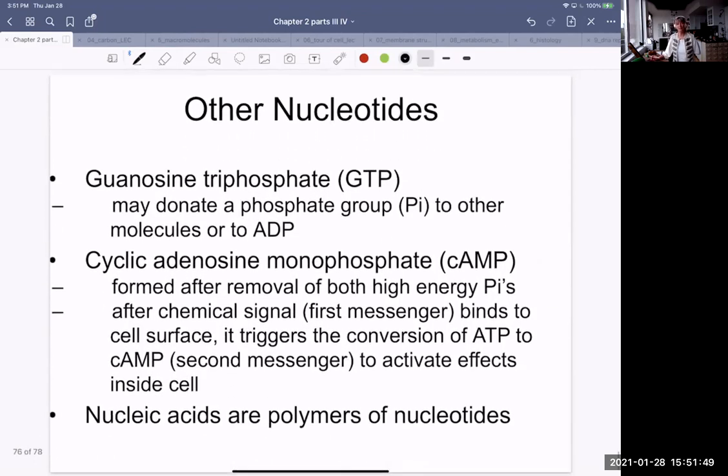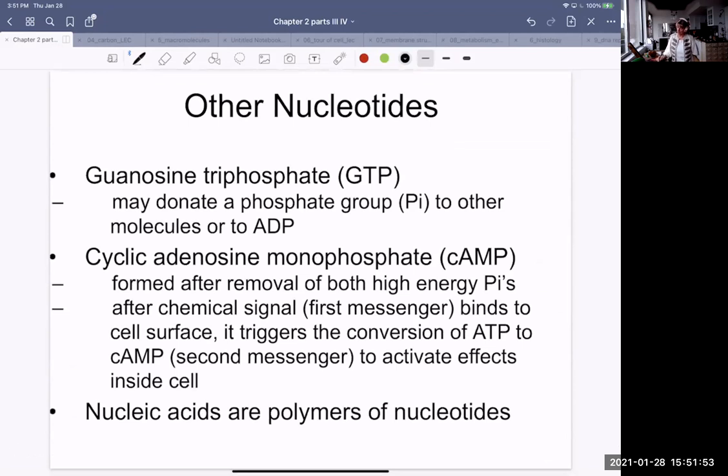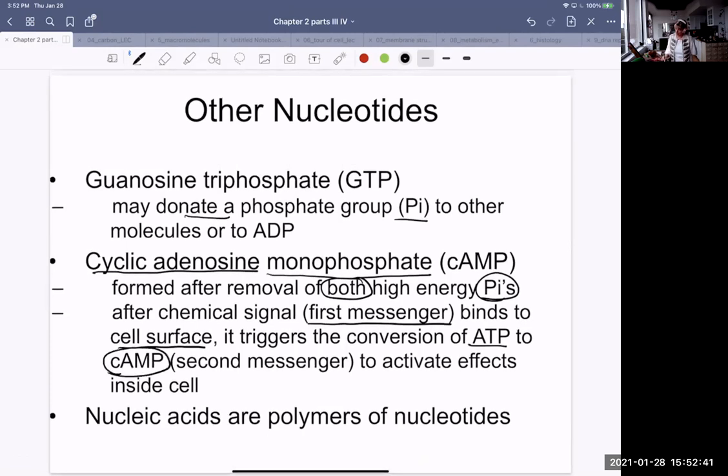Our overview is glycolysis, anaerobic fermentation, but if there's oxygen, aerobic respiration. Here's some other nucleotides of interest. One is called guanosine triphosphate. Sometimes it donates a phosphate group to other molecules or to ADP. It's quite instrumental in the second messenger system of a cell. It's often there waiting to do a bit of work. Cyclic adenosine monophosphate, that's AMP, adenosine monophosphate. You've got your adenine, it's only got one phosphate group left. That's called adenosine monophosphate, mono for one, and it forms after both the phosphates are removed.